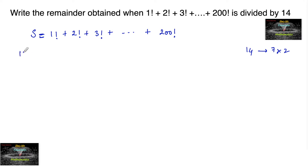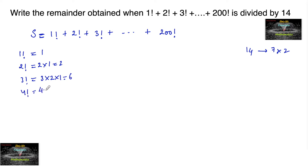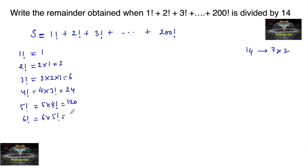1 factorial is 1, 2 factorial is 2 into 1 = 2, 3 factorial is 3 into 2 into 1 = 6, 4 factorial is 4 into 3 factorial = 4 into 6 = 24, 5 factorial is 5 into 4 factorial = 5 into 24 = 120, and 6 factorial is 6 into 5 factorial = 6 into 120 = 720.